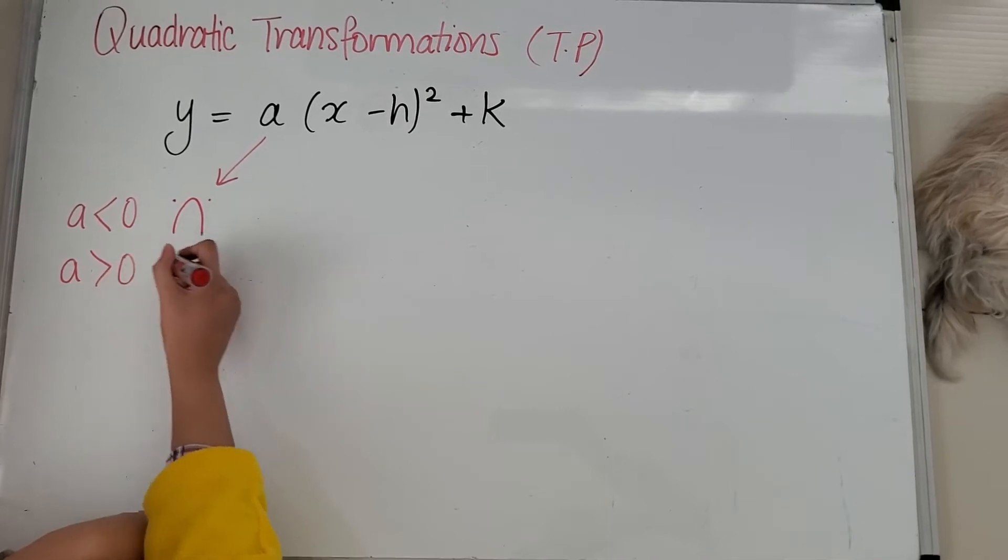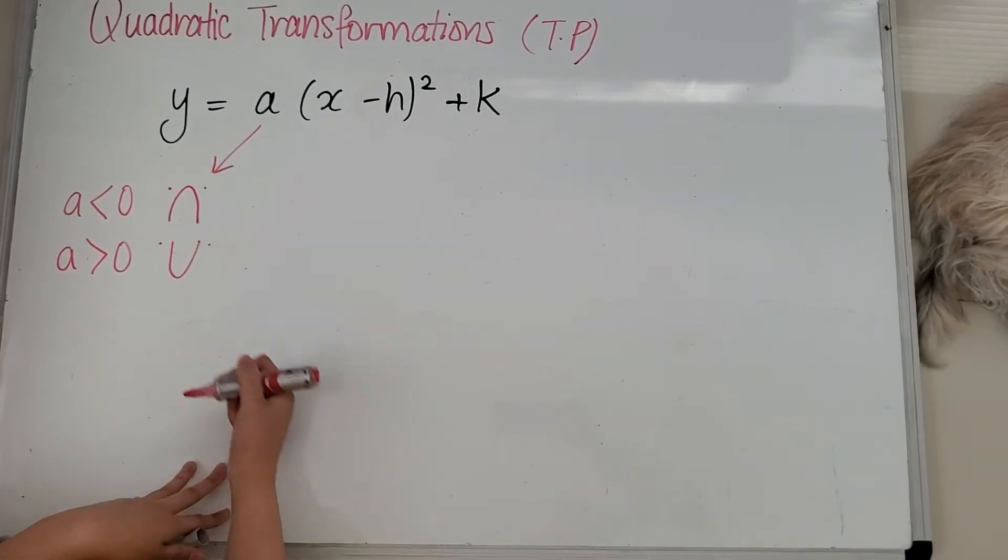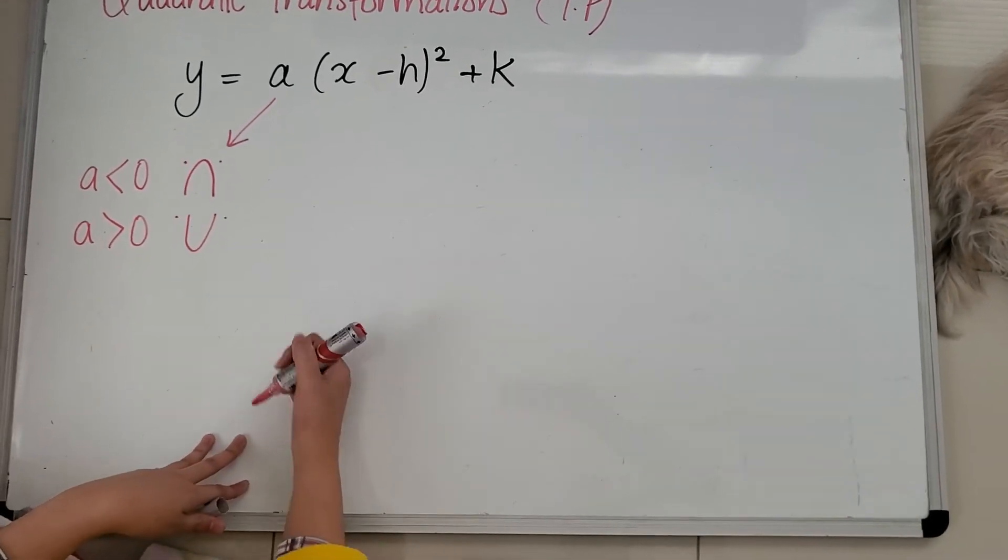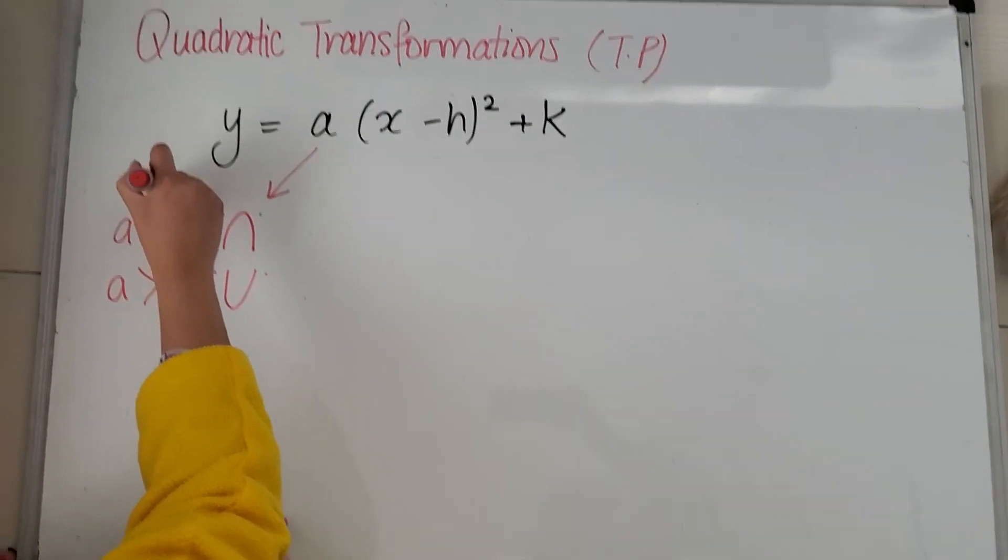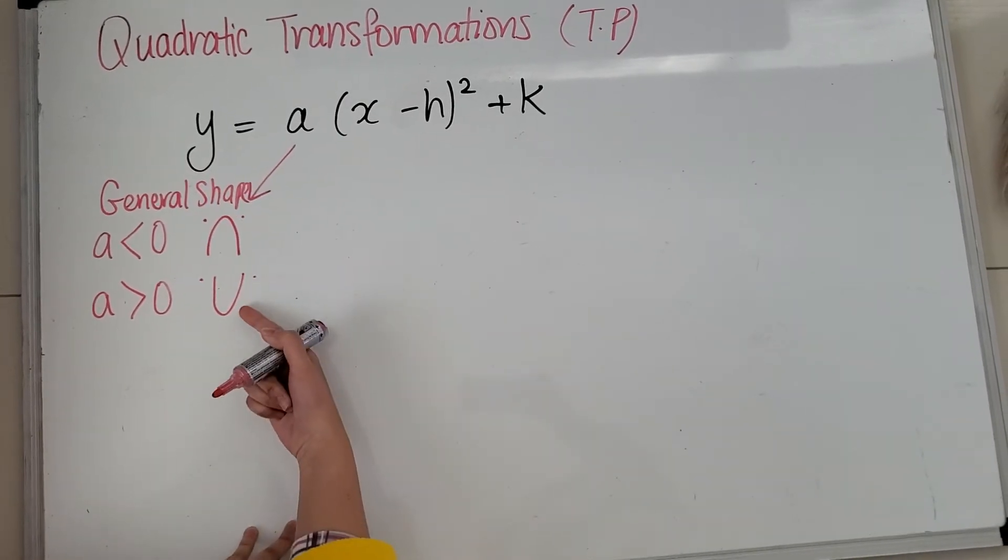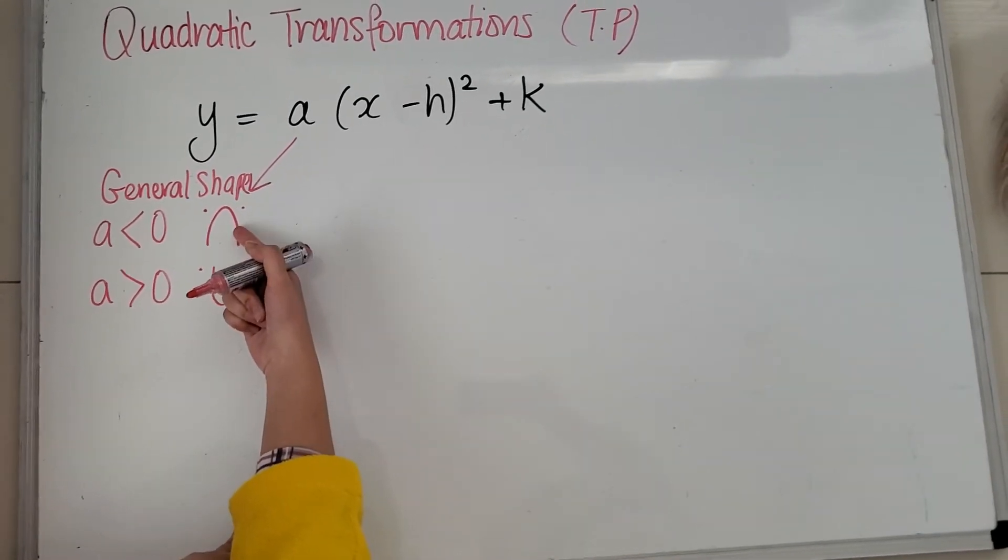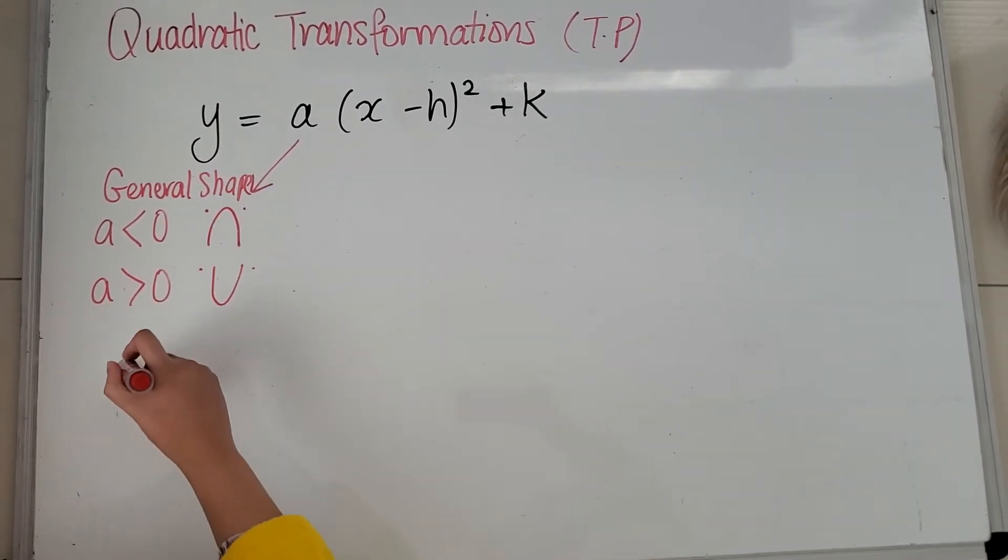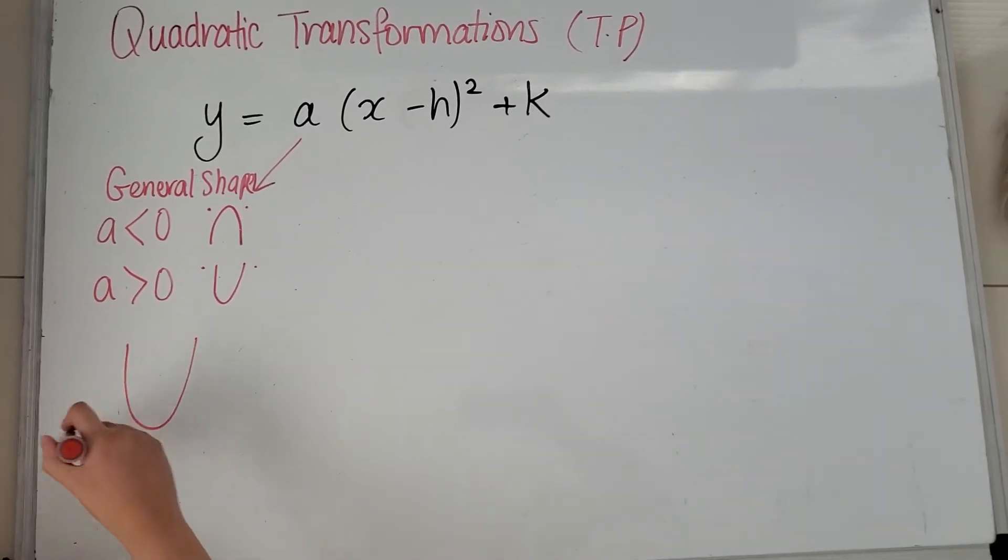If your a is positive, then it's a happy face, so it is in that form. So this a tells you your general shape or your dilation. This, if it is a negative, it means that there is a reflection. So usually your quadratics are like that.